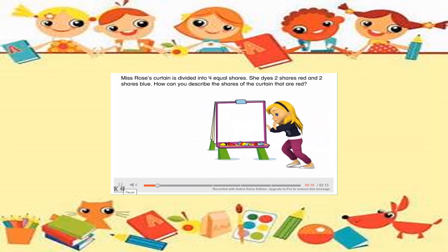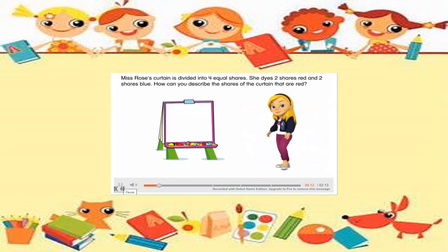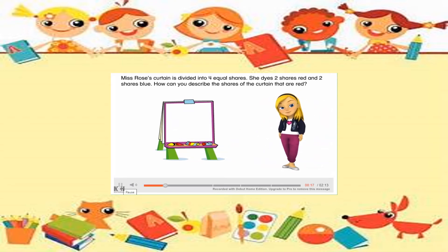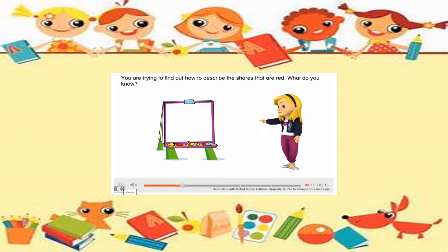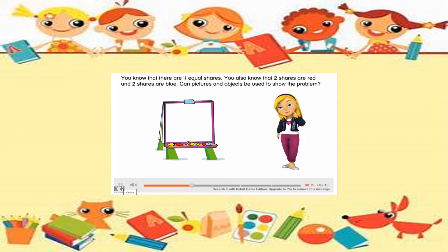Miss Rose's curtain is divided into four equal shares. She dyes two shares red and two shares blue. How can you describe the shares of the curtain that are red? You are trying to find out how to describe the shares that are red. You know that there are four equal shares, and you also know that two shares are red and two shares are blue.